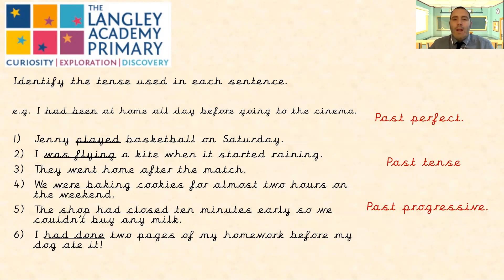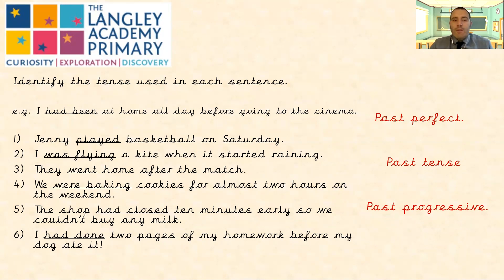Now it's your turn to show me what you've learned. Read through these sentences and identify the tense used in each one. Sentence one: Jenny played basketball on Saturday. Sentence two: I was flying a kite when it started raining. Sentence three: They went home after the match. Sentence four: We were baking cookies for almost two hours on the weekend. Sentence five: The shop had closed ten minutes early so we couldn't buy any milk. Sentence six: I had done two pages of my homework before my dog ate it. Pause the video to complete your work. If you're getting stuck, rewind and refresh your memory.